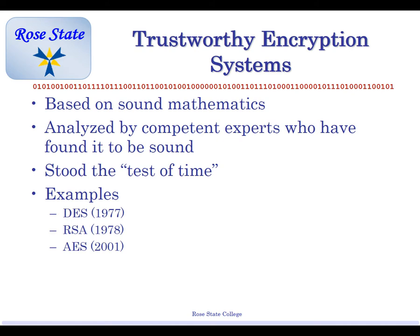Trustworthy encryption systems are based on sound math — someone actually thought about what they were doing. They've been analyzed by competent experts who found them to be sound. And they've stood the test of time. The Vigenère cipher lasted 300 years. DES was introduced in 1977, RSA, and AES — AES is still in use today.